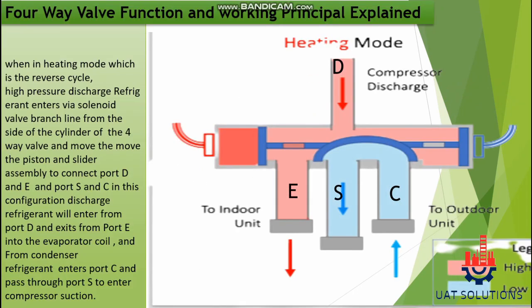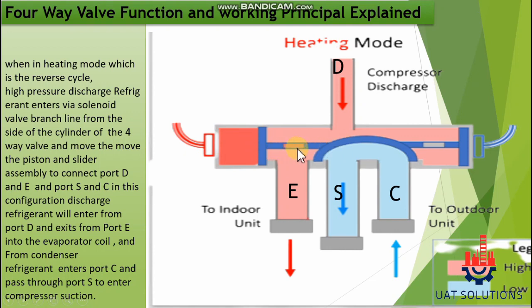When in heating mode, which is the reverse cycle, high pressure discharge refrigerant enters via the solenoid valve branch line from the side of the cylinder of the four-way valve, and moves the piston and slider assembly to connect port D and E, and also connects port S and C.